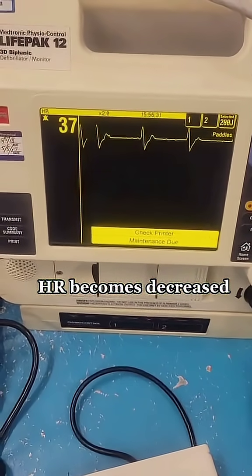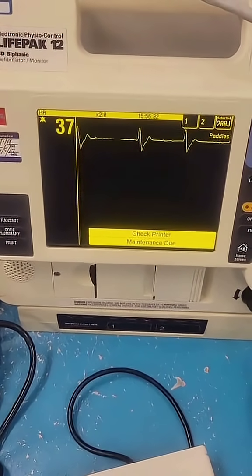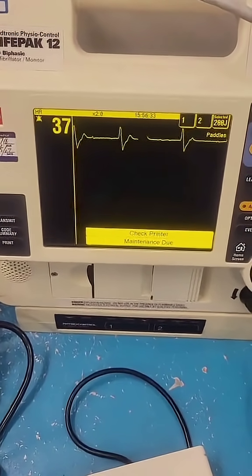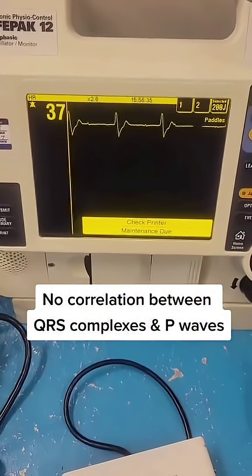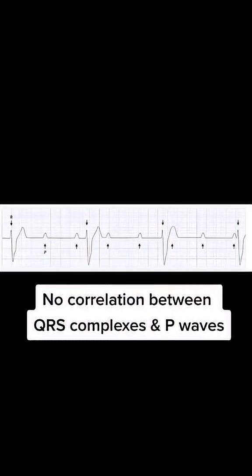If you look closely, you can tell that the P waves are actually on time with each other, and the QRS complexes are on time with each other, but they kind of don't talk to each other. So they're both working on two different rhythms.